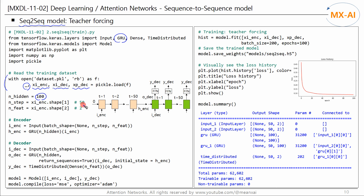The number of time steps in the training data is 50 — that is, the time steps of the encoder and decoder are each 1 to 50. The number of time steps in the encoder and decoder do not need to be the same; here we use the same number. And the number of features is 2. First, we create an encoder.